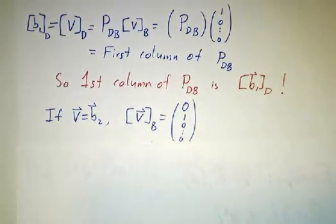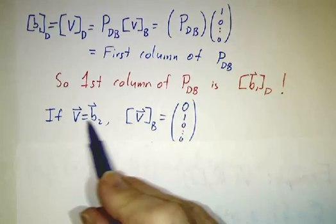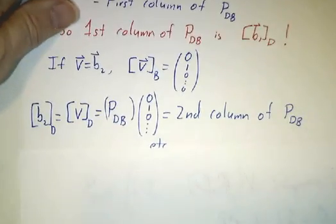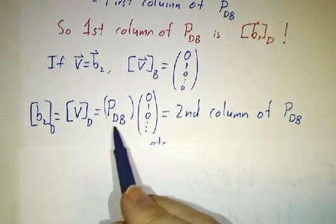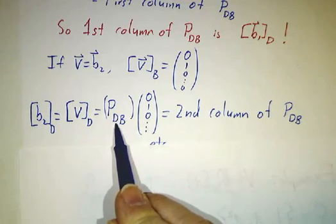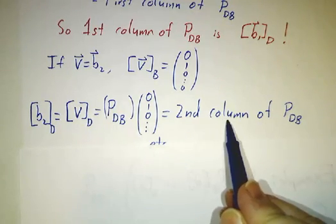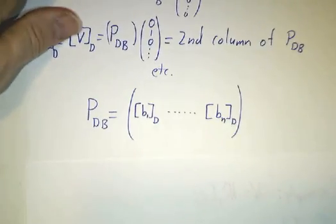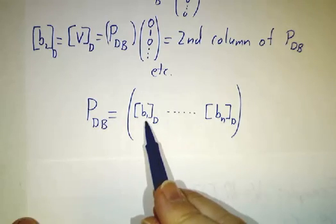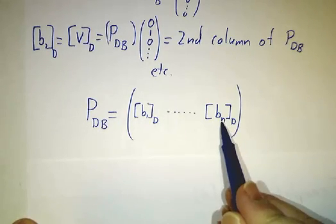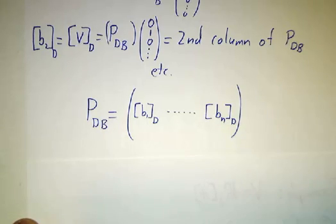We could do the same thing if V was b2. If V was b2, then the coordinates in the B basis would be 0, 1, 0, 0, 0, 0. And the coordinates in the D basis would be what you get when you multiply that by P_DB, so you'd get the second column of P_DB. Keep going, and you get that the first column of P_DB is b1 in the D basis, the second column is b2 in the D basis, the last column is bn in the D basis, and that's our formula.